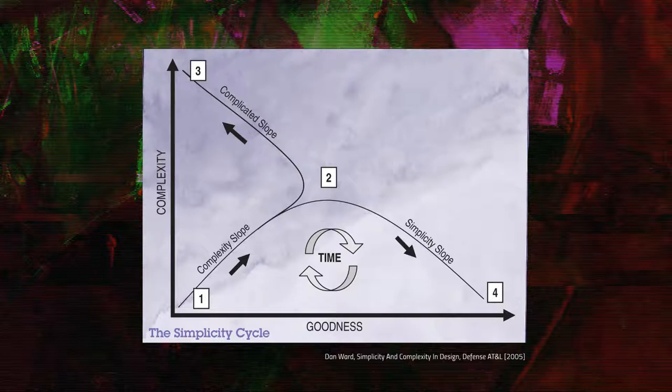Point two is usually where you have to make a choice: it's impossible to continue adding complexity and adding utility at the same time, because the complicated is the enemy of the useful. At this stage, many projects make the mistake of adding further complexity, making the project even more complicated, and as a result starting to travel down the complicated slope towards point three — where complexity increases but goodness and utility dramatically decreases. Conversely, successful projects make the opposite decision: they simplify, removing complexity from the content, from the ways of delivering that content, from the platforms being used, and so on — therefore adding utility while removing complexity.